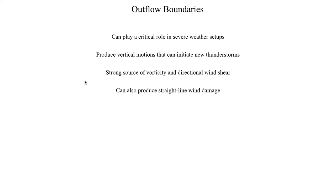Although not quite as common, these currents of cold air can produce straight-line wind damage if winds behind them are sufficiently strong. Typically on any given outflow boundary, winds behind it are 20, 30, 40 miles per hour, which usually can't cause a whole lot of damage. But on a few rare occasions, winds in outflow boundaries can be 50 or even 60 miles per hour, which can cause a lot more damage than a 30 or 40 mile per hour wind.